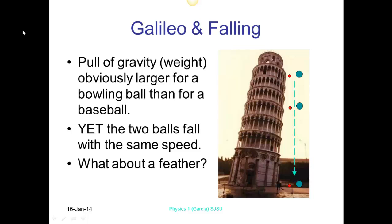So the pull of gravity is obviously larger on a bowling ball than a baseball, yet they actually fall at the same speed. And we just talked about a feather. So a feather, if you neglect the air resistance, will fall at the same rate as a bowling ball.